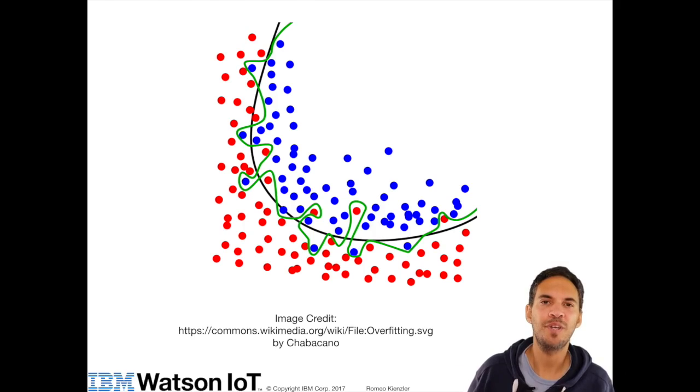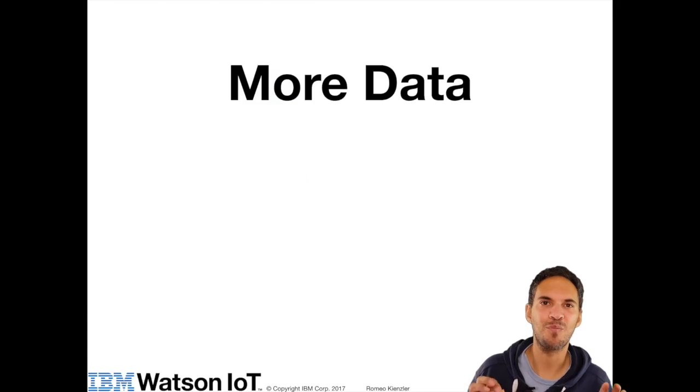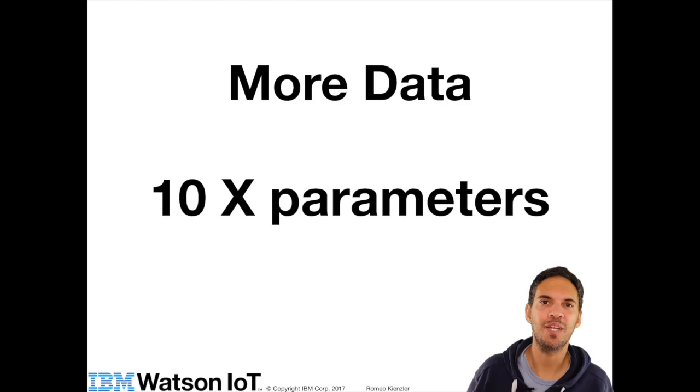So how can we prevent overfitting in neural networks? One way is just get more data. That's always the first thing you should try. There's a rule of thumb: you should have 10 times more data than you have weights or parameters in your model.